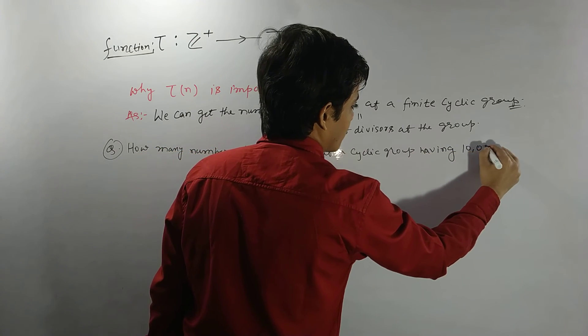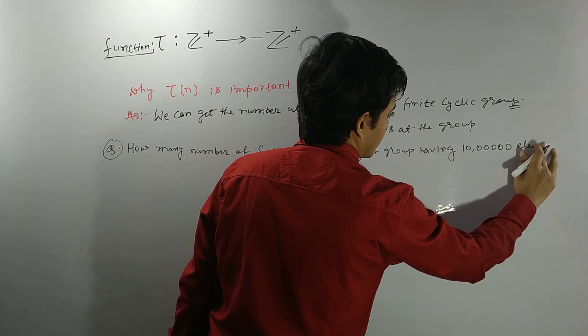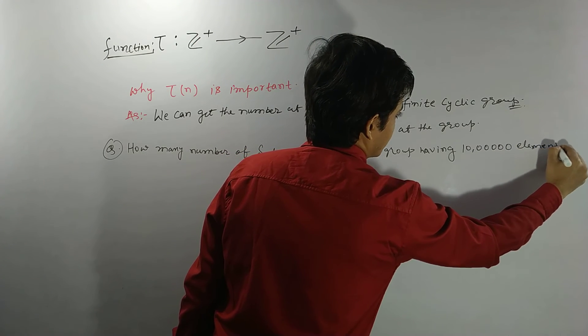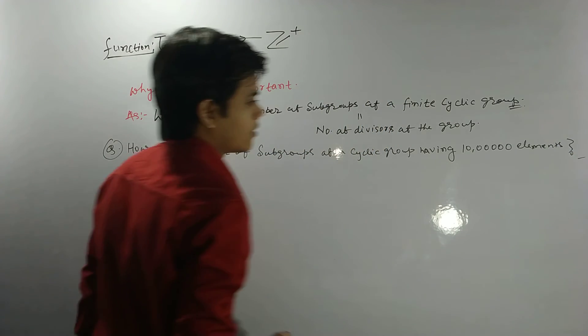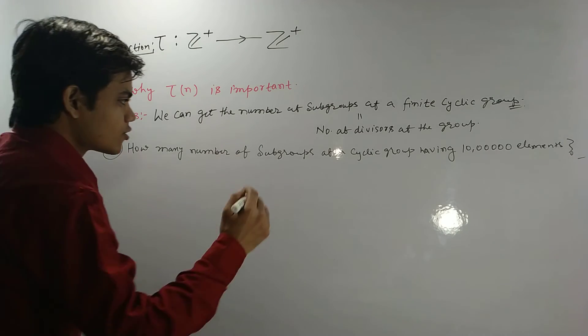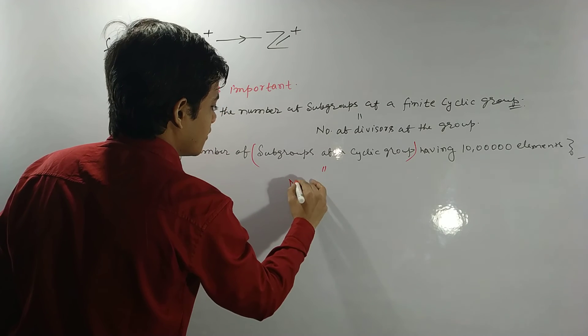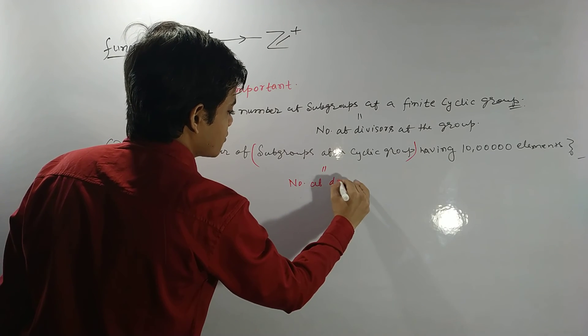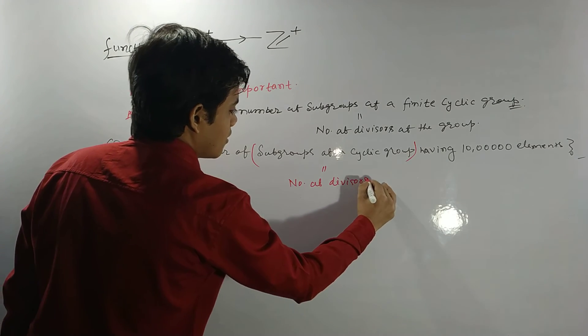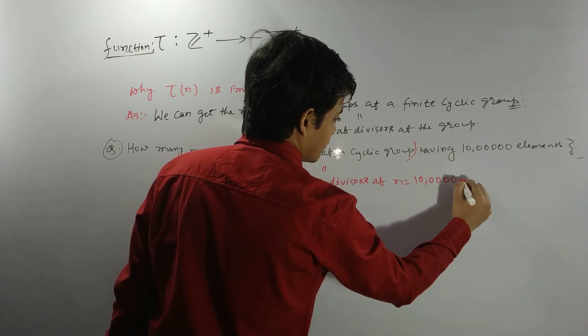How many number of subgroups of a cyclic group having 10 lakh number of elements? Alright, this is my question. How many number of subgroups of a cyclic group having 10 lakh number of elements? So what will you do? Just one line answer.